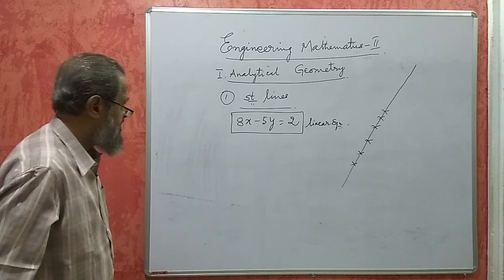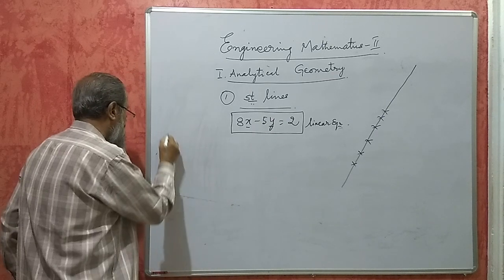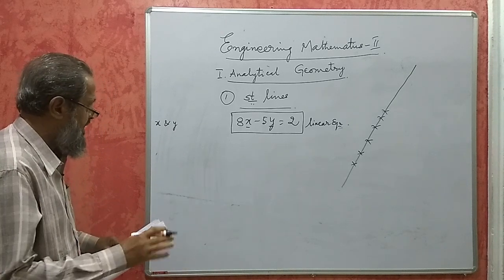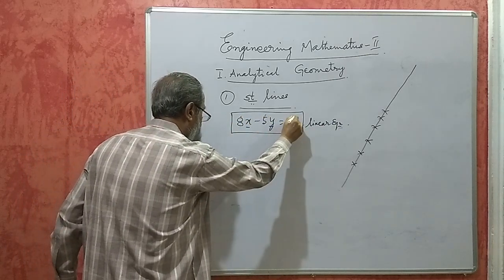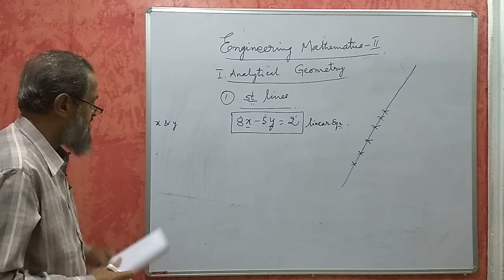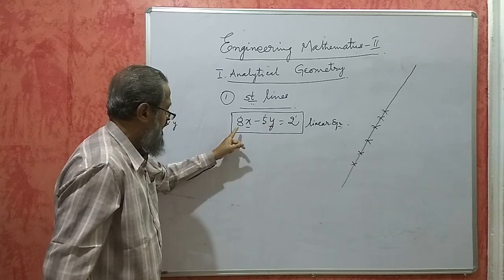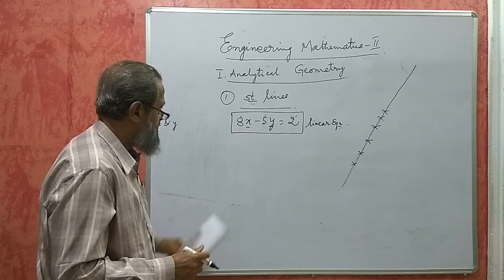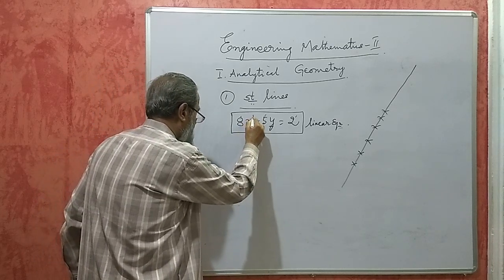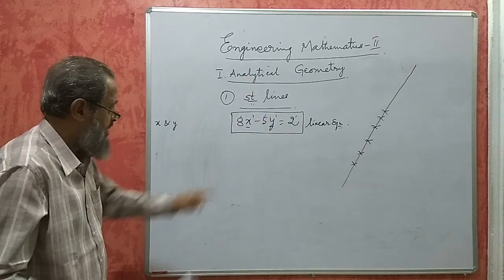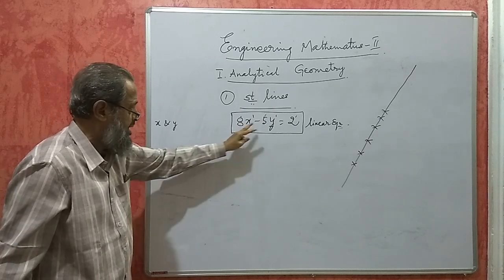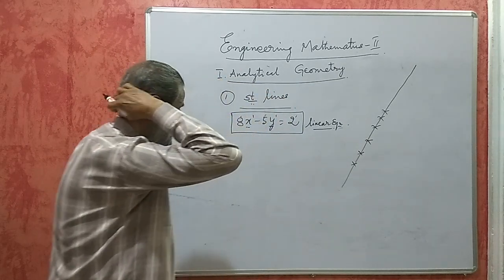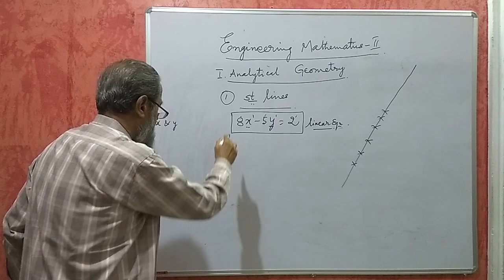Here we have two variables, x and y. Variables means their value is not constant — it can change. The numbers 8, 5, and 2 are called constants. So in this equation there are three terms, two variables, and three constants. The power of x is 1 and the power of y is also 1. Any mathematical equation which has two variables x and y with power 1 is known as a linear equation, because it represents a straight line.